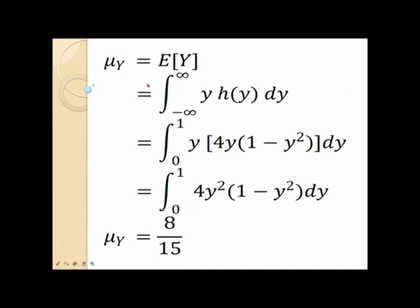In the same manner, we now calculate the expected value of y, which is the integral of y times its corresponding density h of y dy. We derived the density function for y as 4y times the quantity (1 minus y squared). This equation becomes the integral from 0 to 1 of y times 4y(1 minus y squared) dy. After simplification and evaluating at y equals 0 and y equals 1, the expected value of y, which is the mean of y, equals 8 over 15.